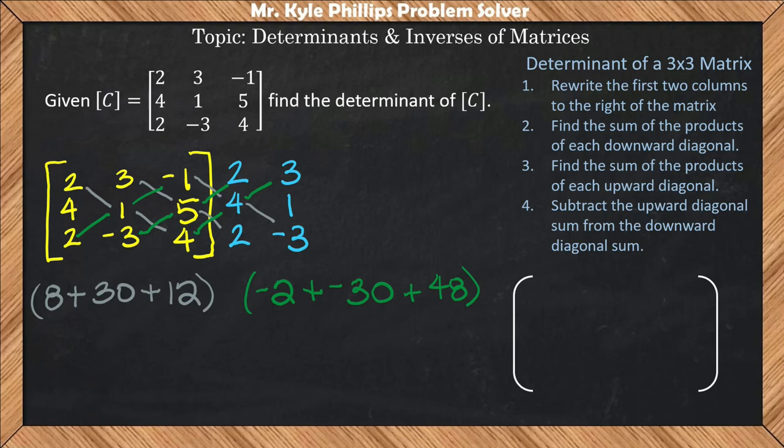And then it says subtract the upward diagonal, so that's here in green, from the downward diagonal sum. So here, we will say our downward diagonal subtract the upward diagonal.